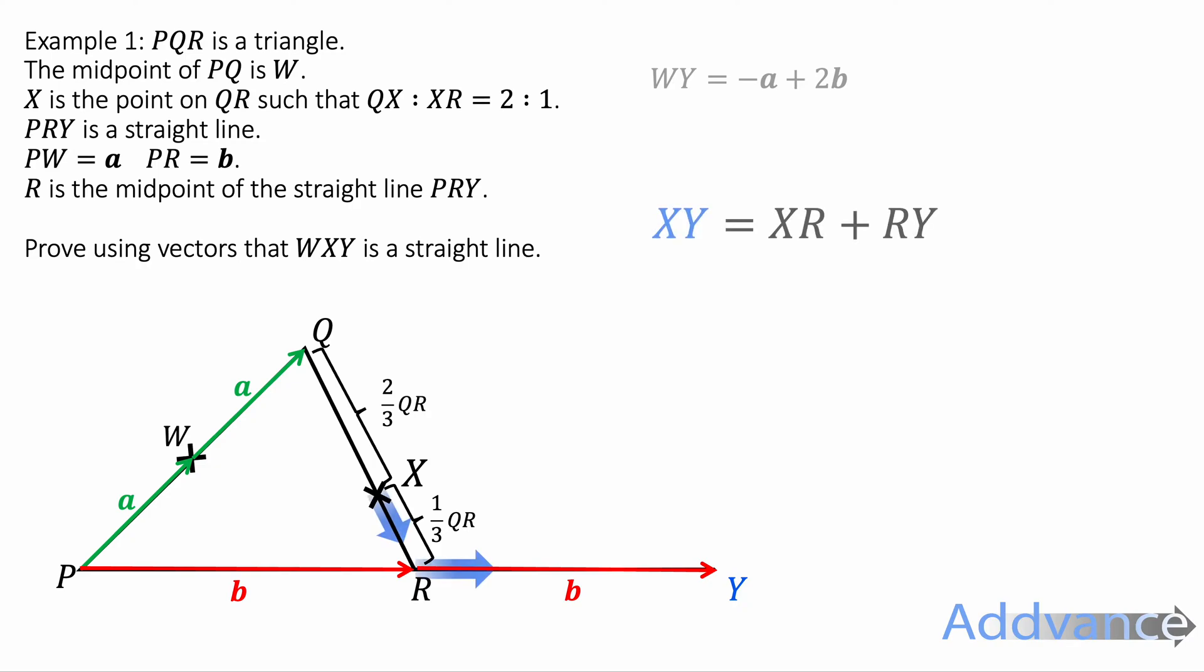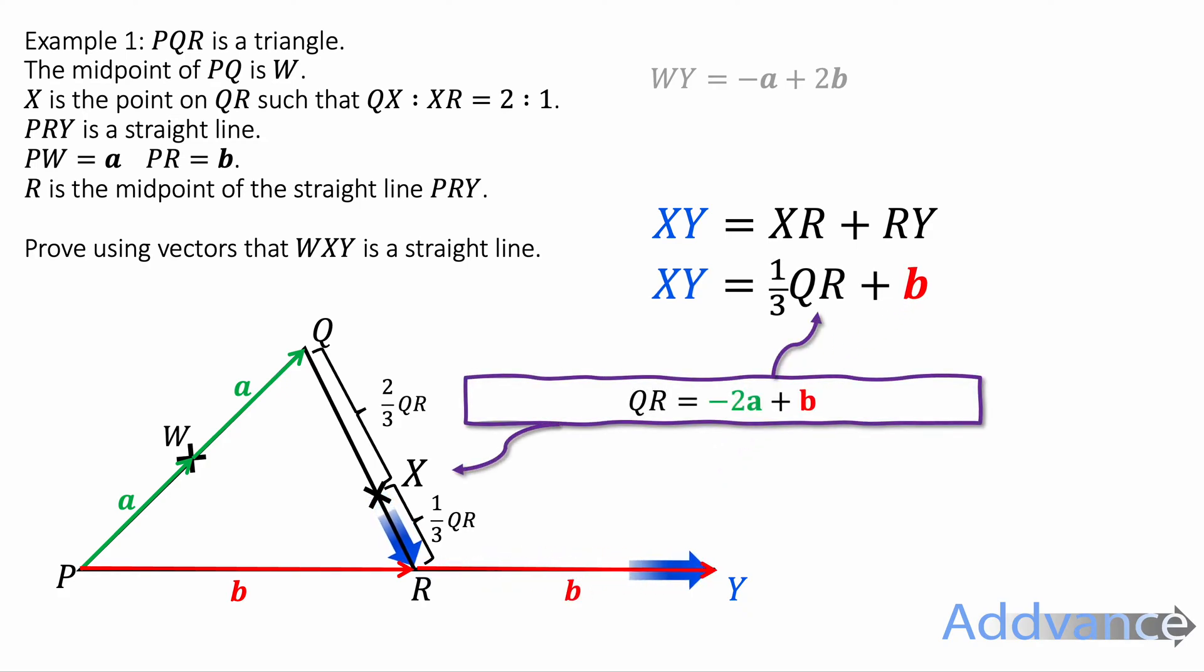So therefore from X to Y is going along this path. It's X to R and then R to Y. But X to R is a third of QR. So we can replace X to R with a third of QR. R to Y is b. So we can immediately replace R to Y with b. Q to R is minus 2a plus b because you're going backwards 2a and then plus b to get from Q to R.